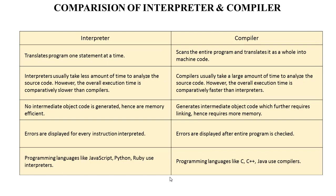Comparison of interpreter and compiler: an interpreter takes a single instruction as input, while a compiler takes the entire program as input. No intermediate object code is generated by the interpreter, whereas intermediate object code is generated by the compiler. An interpreter translates the program one statement at a time, while a compiler scans the entire program and translates it as a whole into machine code. An interpreter usually takes less time to analyze the source code; however, overall execution time is comparatively slower than compilers.